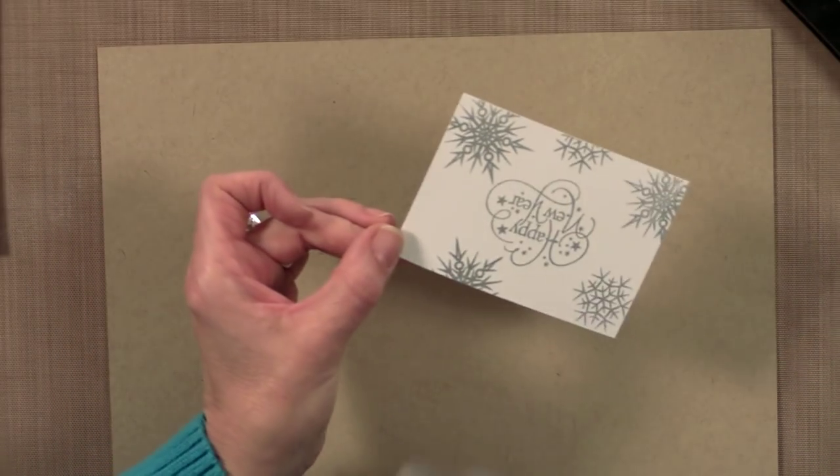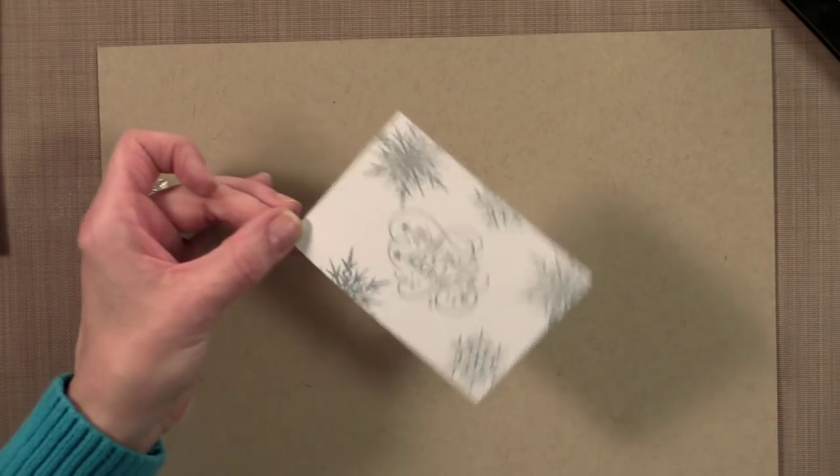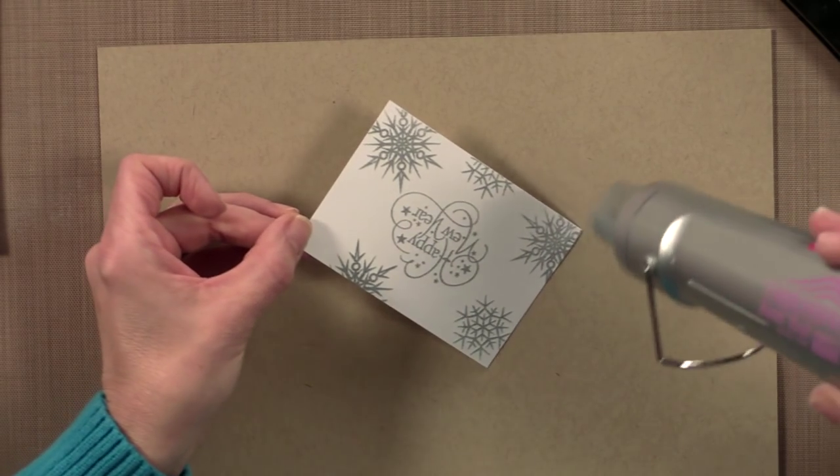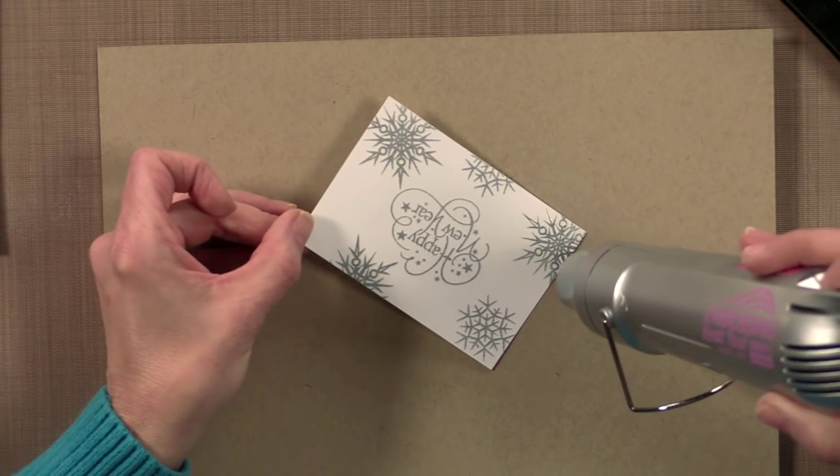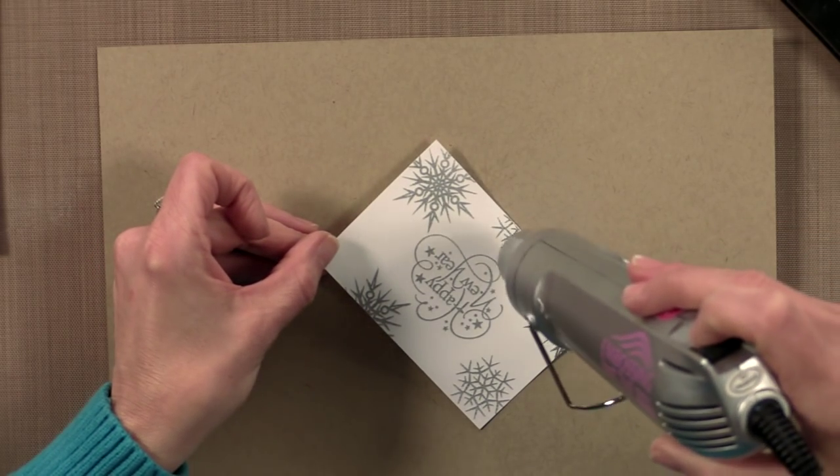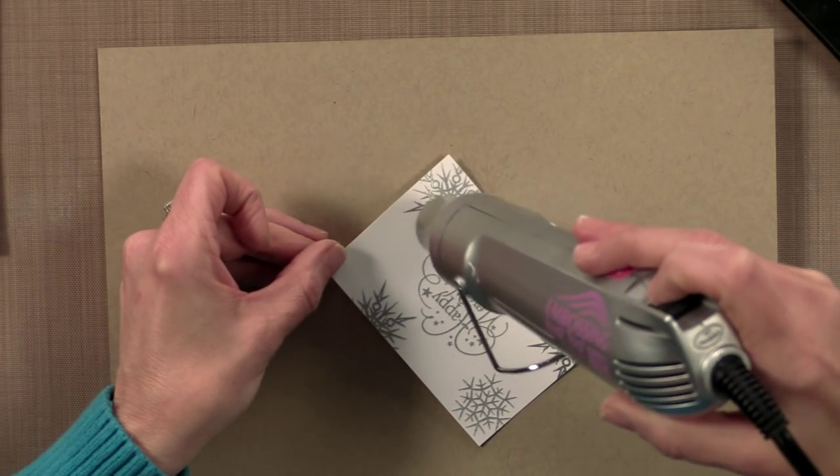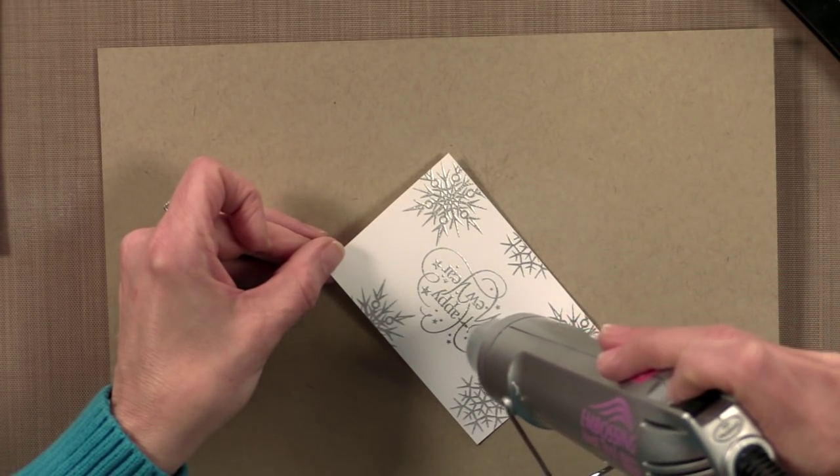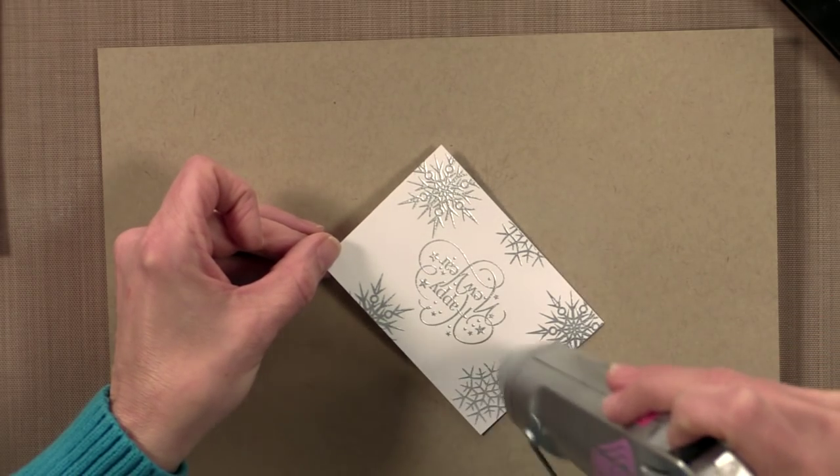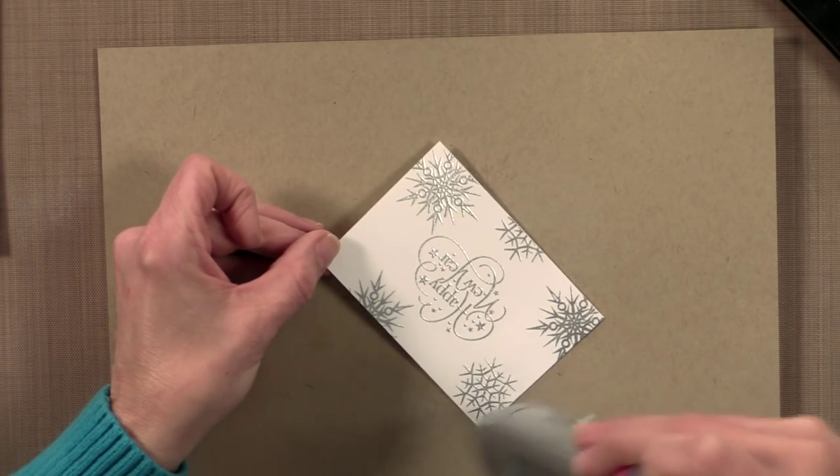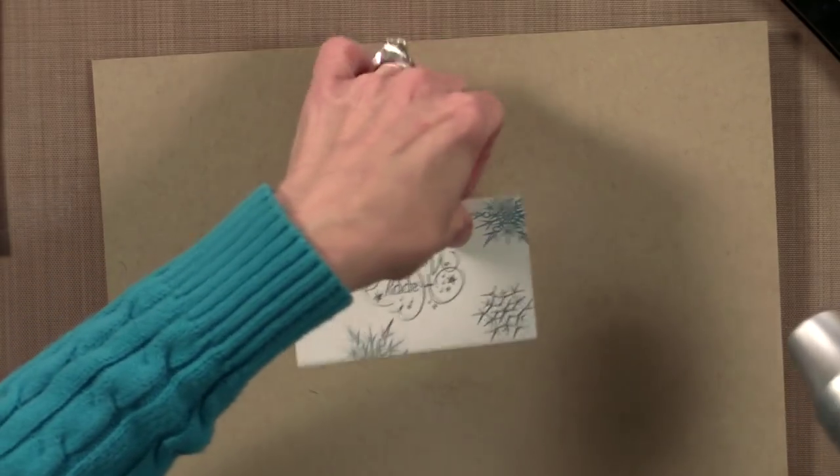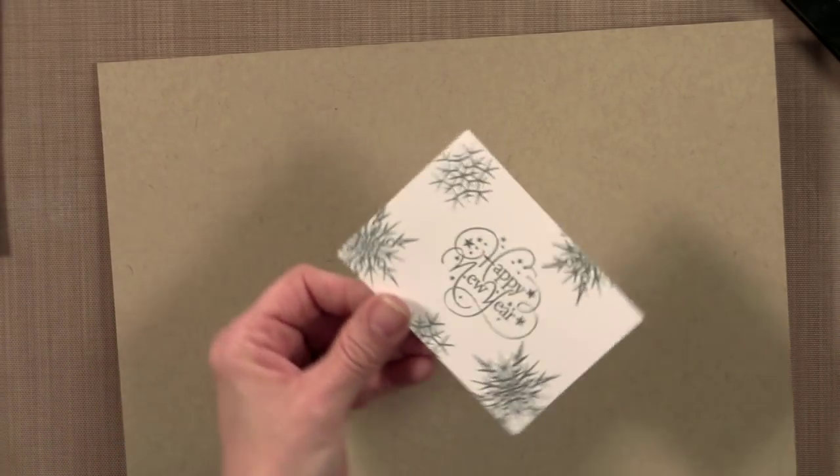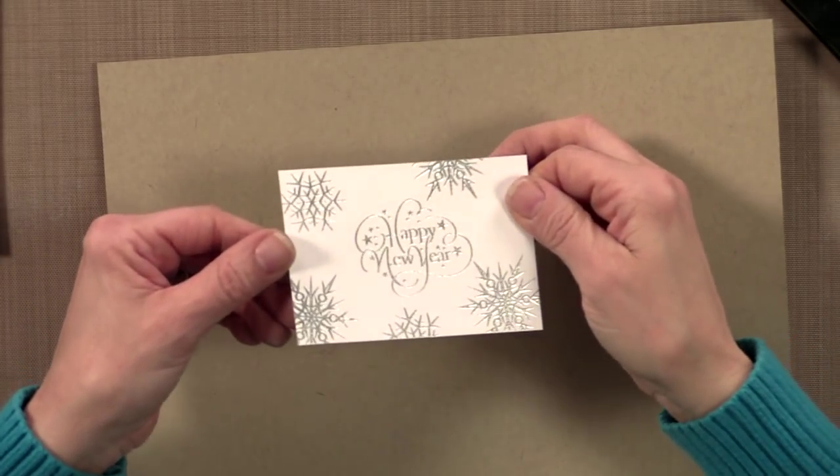It's always good to let your embossing gun heat up a little bit first. You're less apt to warp the paper that way because the powder will melt much more quickly. Our silver powder is so beautiful. You get so much shiny detail using our fine detail embossing powders. Let's turn that a bit. Can you see all that sparkle and shine?